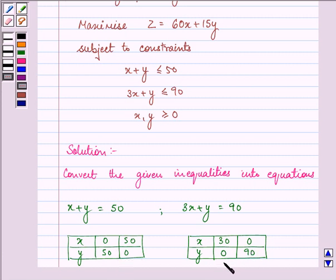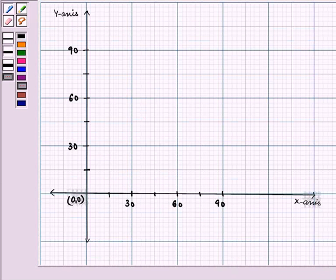Let us plot these two equations on the graph. Since both x and y are greater than or equal to 0, we will be considering the first quadrant.